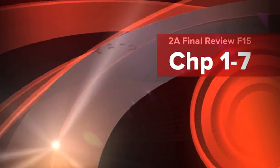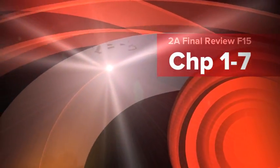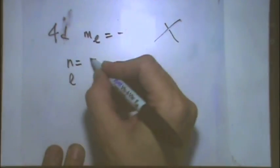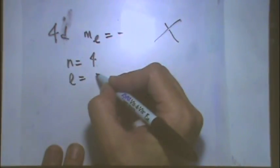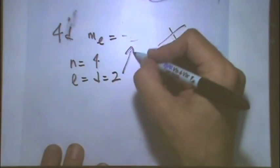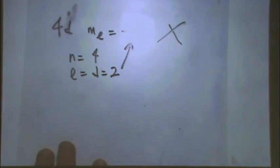Is this allowed or not allowed? N equals L. We have D, which is 2. And M sub L cannot be negative 3 if L is 2. So, not possible. That's one kind of question.